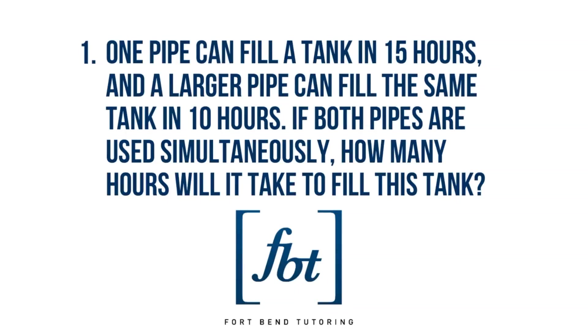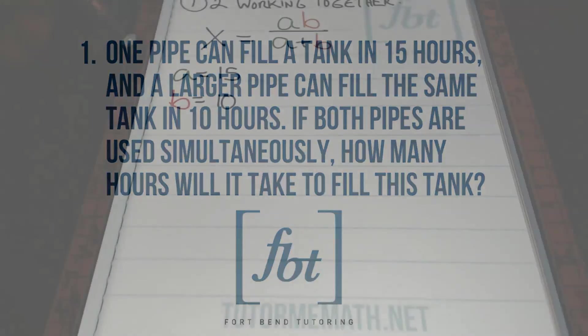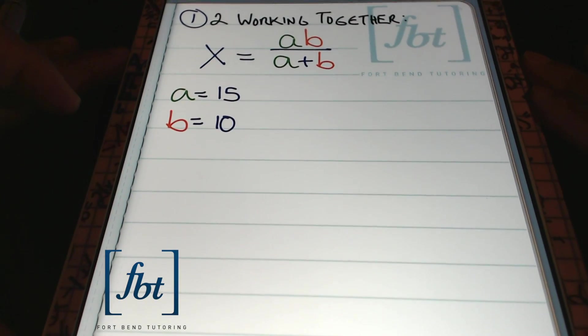So let's move on because I have my first problem for you. In problem number one, we have one pipe can fill a tank in 15 hours and a larger pipe can fill the same tank in 10 hours. If both pipes are used simultaneously, how many hours will it take to fill this tank? Notice that we have two pipes working together. Notice that the job being done is one job. This one job is filling up this one tank. So these shortcuts work well when you just have one job, one goal, one object, one tank being filled.